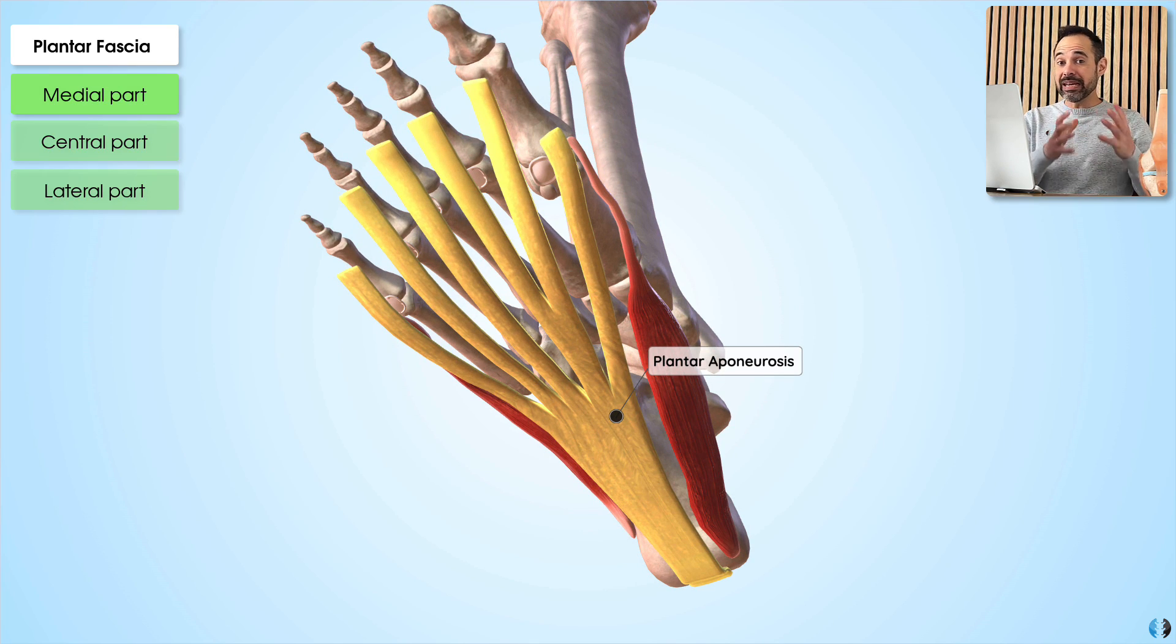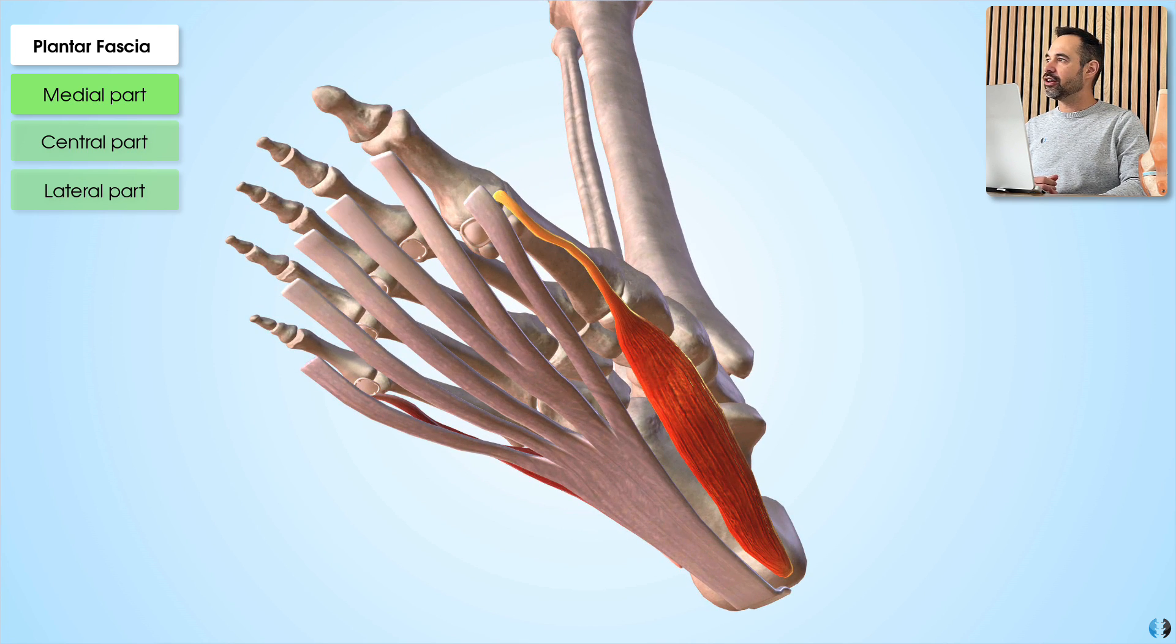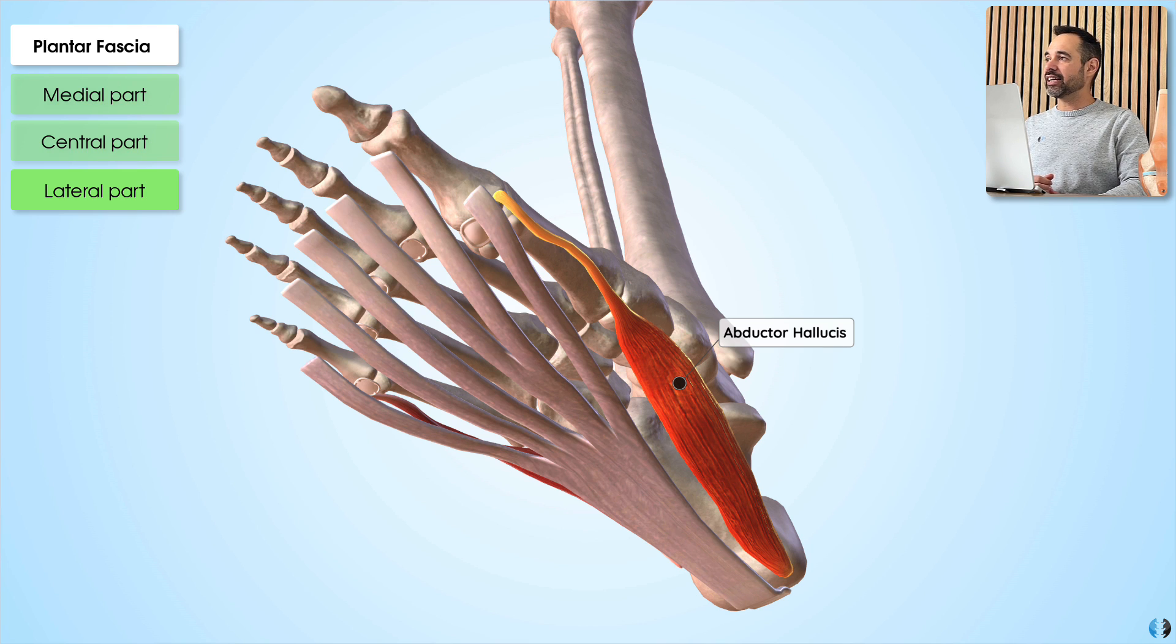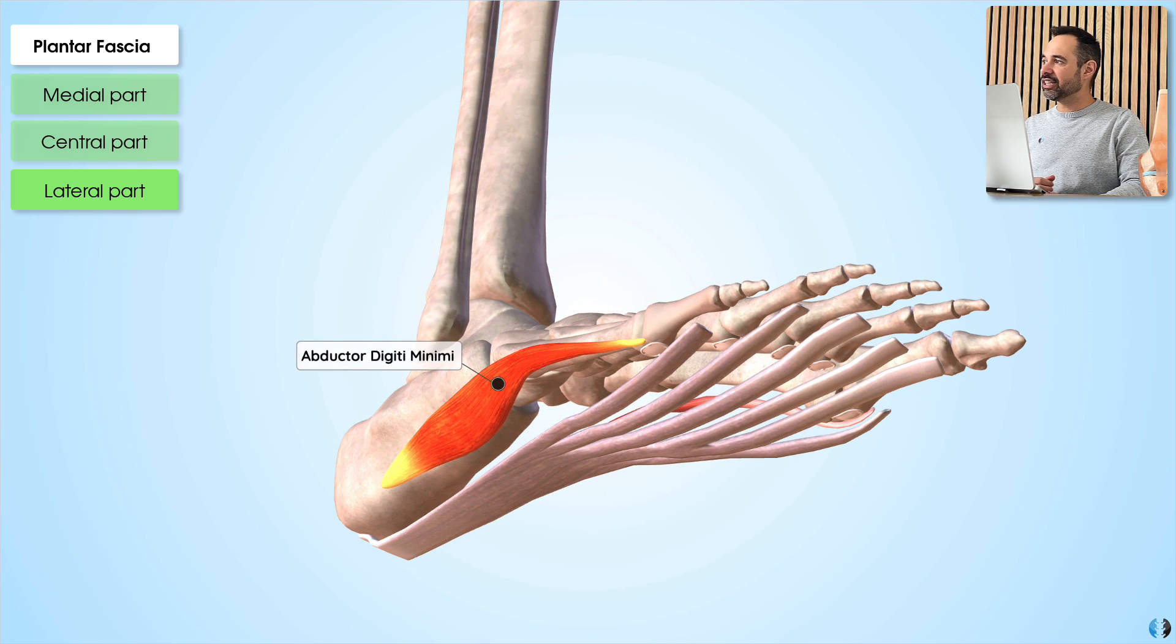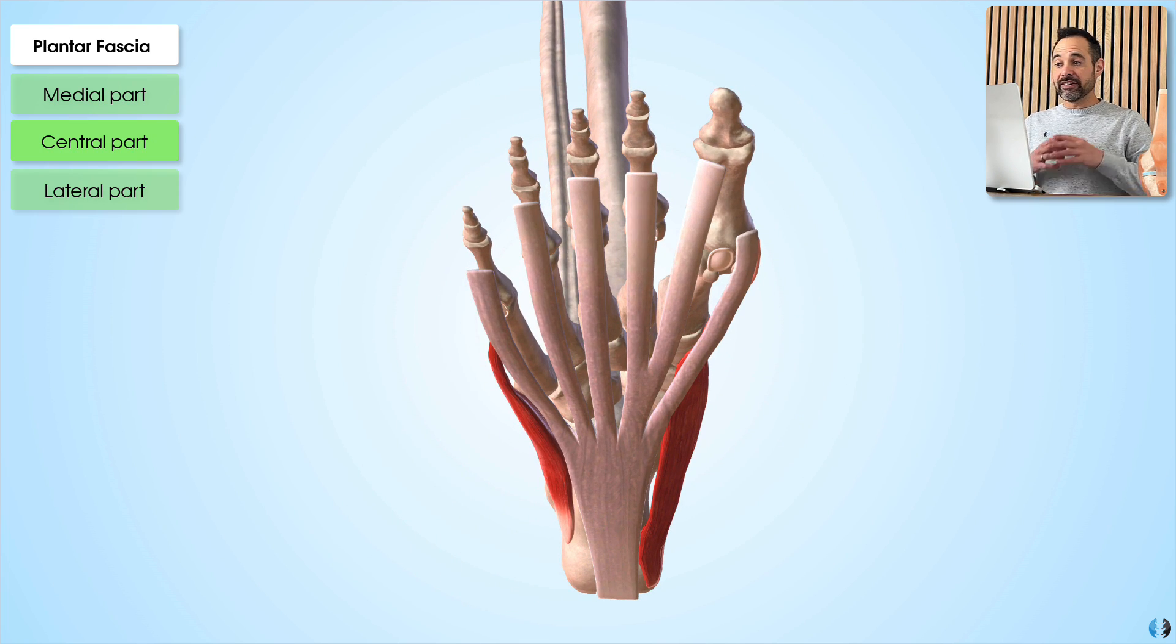Now, the medial aspect of the plantar fascia attaches to the abductor hallucis muscle, as we can see here, and the lateral part attaches to the abductor digiti minimi muscle, as we can see here. So this plantar aponeurosis divides and spreads towards each of the toes.